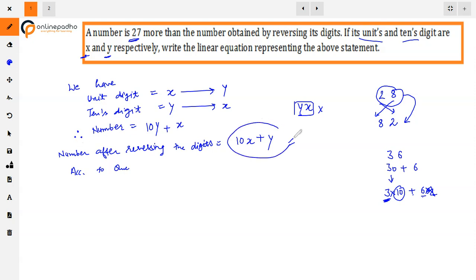This is our new number and this is our original number. The original number is 27 plus the new number. If we add 27, then both will be equal. Here we put values: 10y plus x equals 10x plus y plus 27.